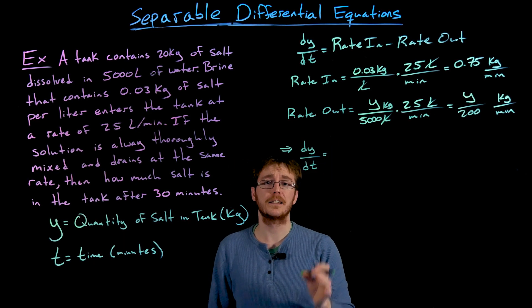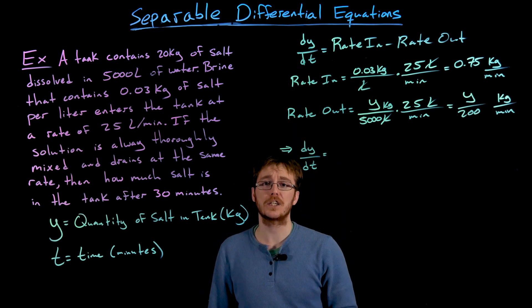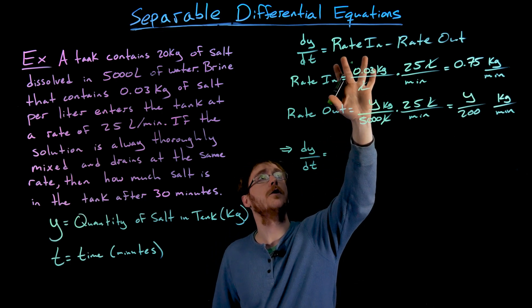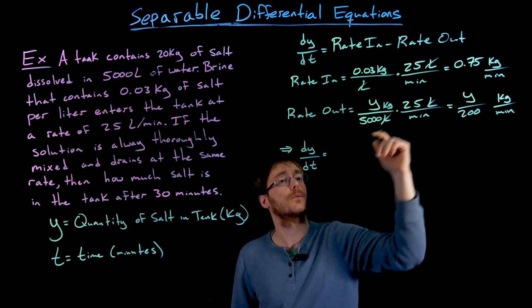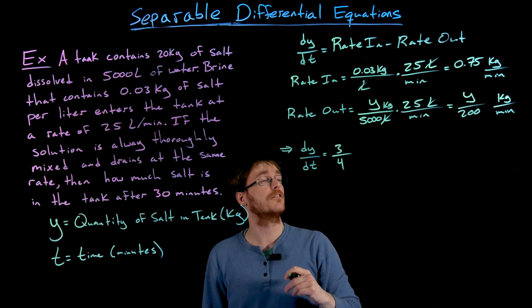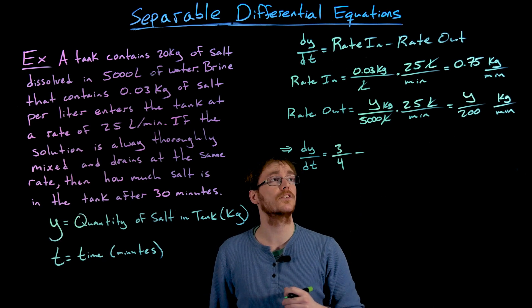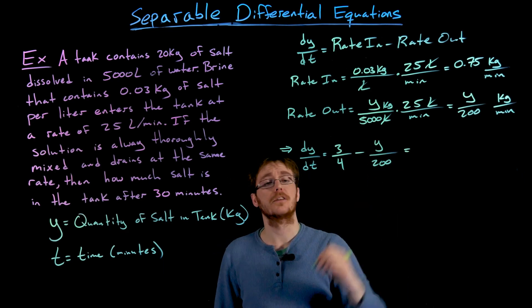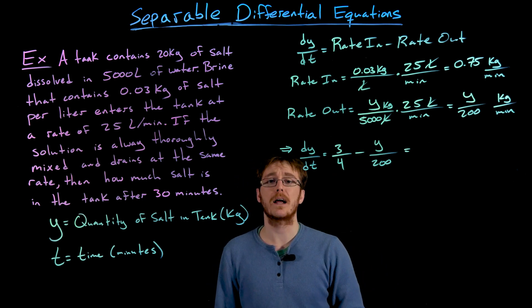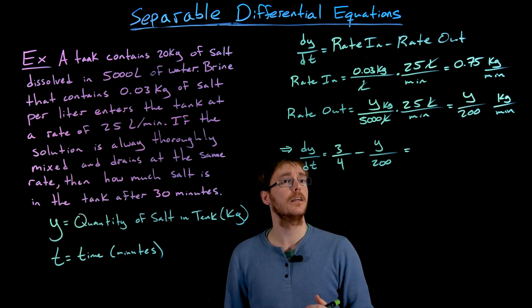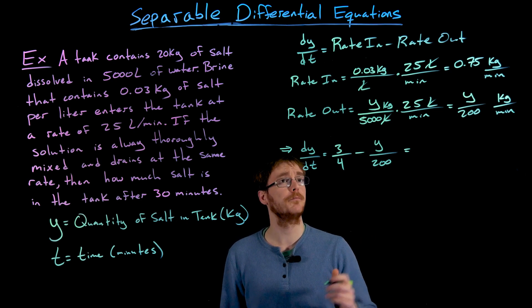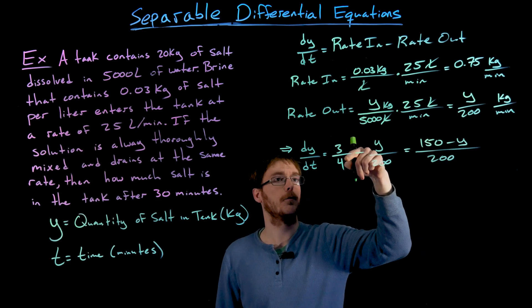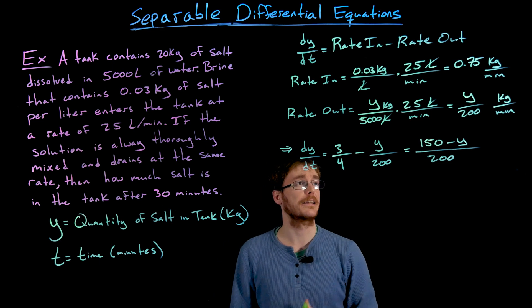Putting this together, we can write our differential equation. The instantaneous rate of change of salt in the tank equals rate in minus rate out: dy/dt = 3/4 minus y/200. Writing the right-hand side as a single fraction with common denominator 200, we get dy/dt = (150 minus y) / 200.